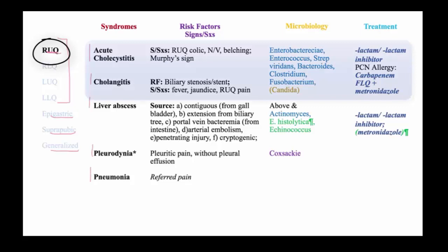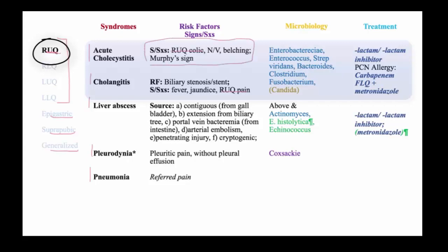Acute cholecystitis and cholangitis both present with colicky right upper quadrant pain. In the case of cholecystitis, there's often nausea, vomiting, belching, and a positive Murphy's sign, where you press underneath the ribs and ask the patient to breathe in, at which time the gallbladder descends onto the fingers and causes pain.